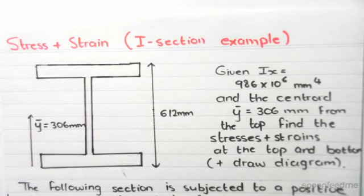The following example is a stress and strain problem presenting bending about the x-axis. We have a symmetrical I-section with a total depth of 612 millimeters. The centroid, the vertical centroid coordinate, is 306 millimeters from the top, which is obvious because it's a symmetrical section.